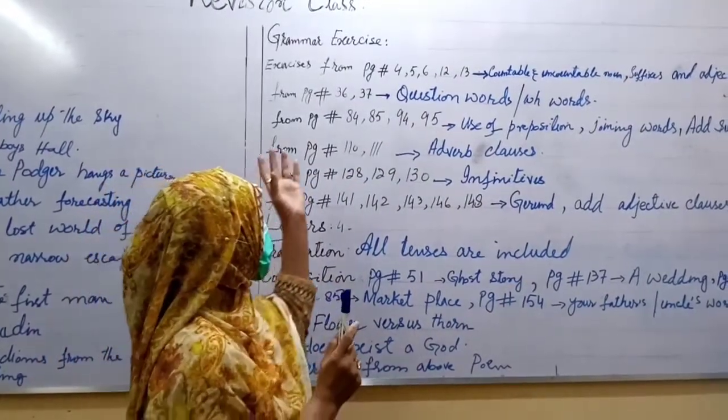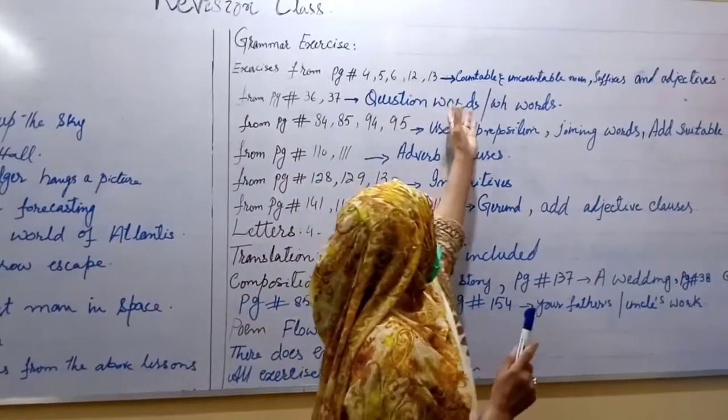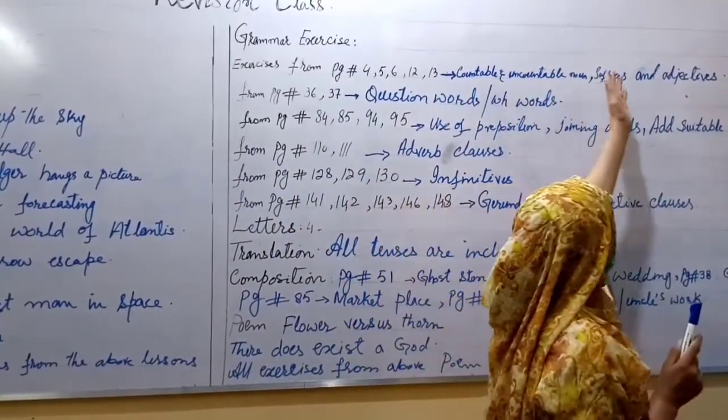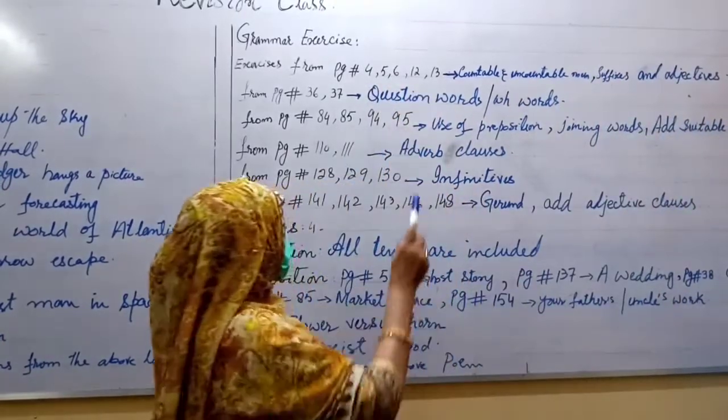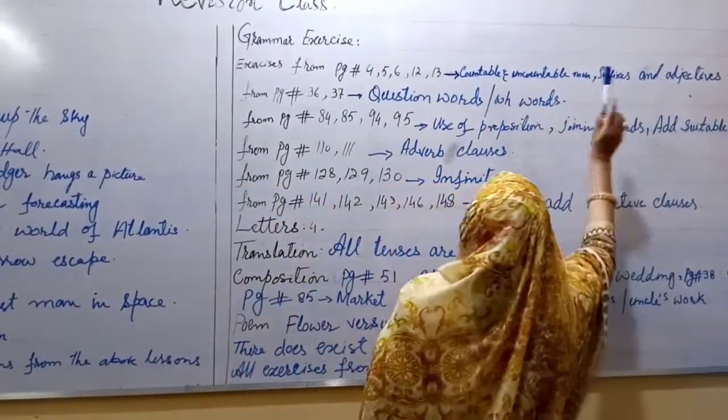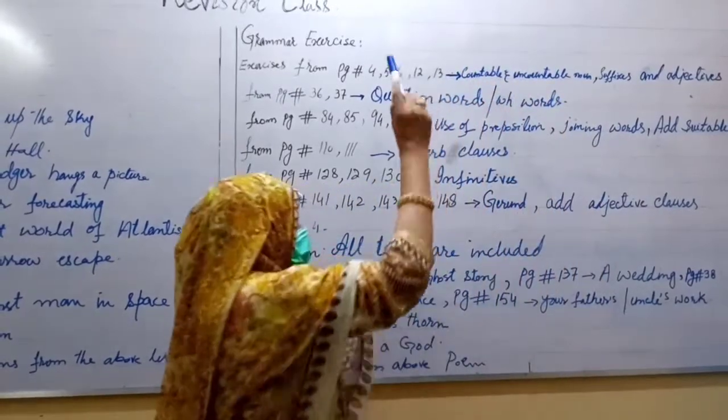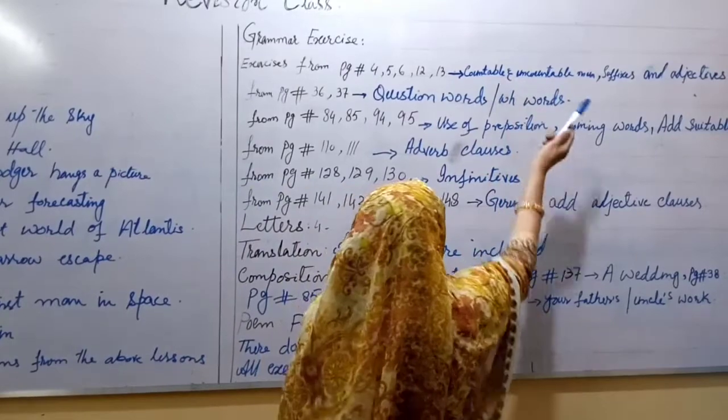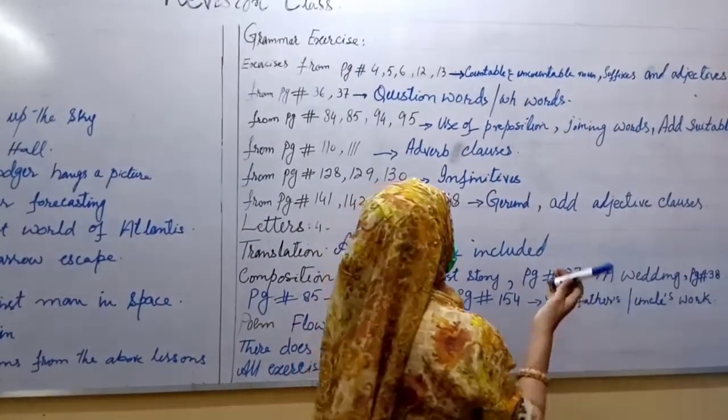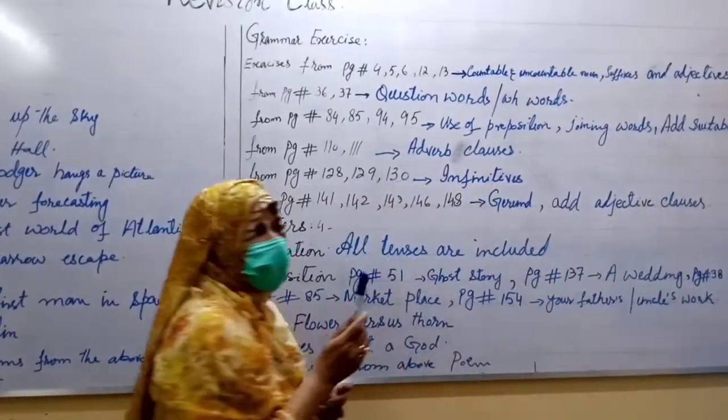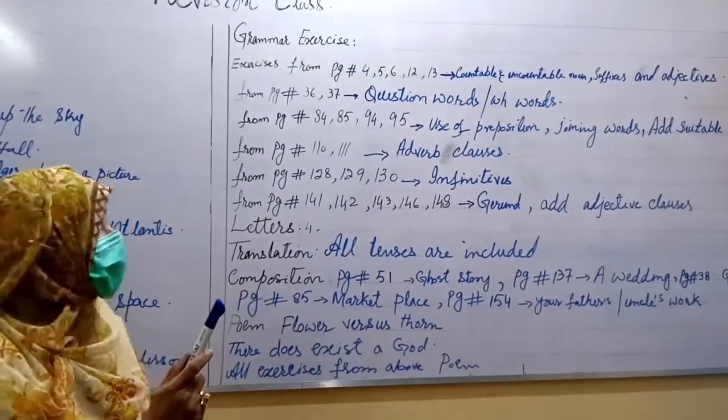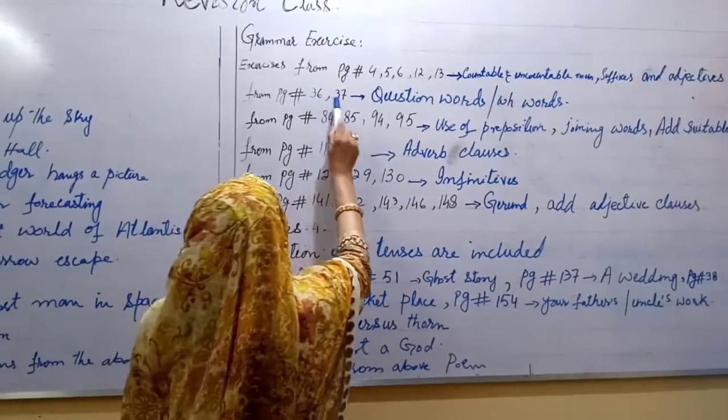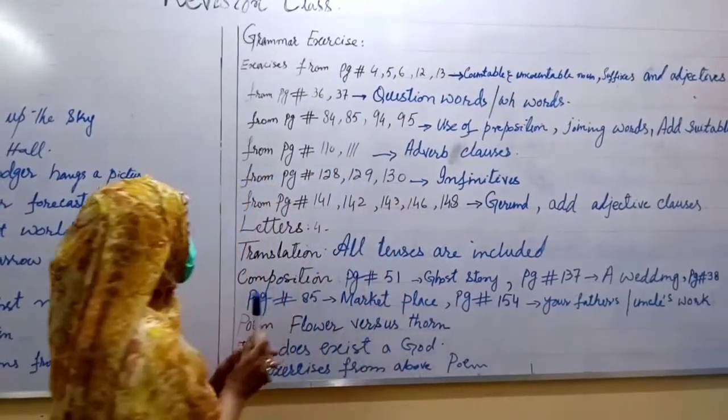You have done exercises about countable and uncountable noun, suffixes and adjectives. You have done different exercises which is related about these topics. For example, you have done exercise add countable and uncountable noun, add suffixes and proper adjectives.